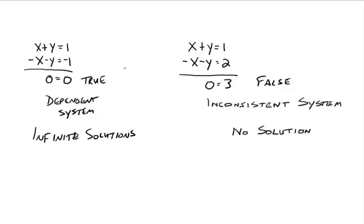When we used the elimination method, we were trying to eliminate a letter. You do whatever you have to do to make the coefficients of that particular letter be the same but opposite signs, so when you add them up, they go away. And sometimes all the letters disappear — you have the left side going to zero and the right side equal to zero.